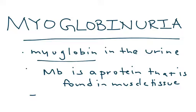And this myoglobin acts as a reserve of oxygen. So how does this myoglobin get into the urine?